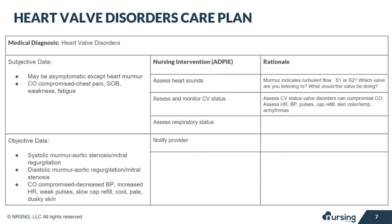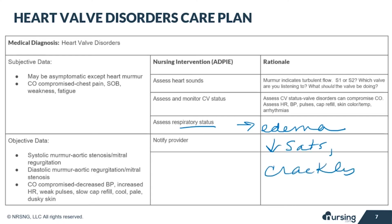Assessing respiratory status is also important because if blood is not moving forward or is backing up, this can create pulmonary congestion and lead to pulmonary edema. We would see decreased oxygen saturation, crackles in the lungs, and the patient can even have pink frothy sputum. We also want to notify the provider of any new or sudden onset of murmurs, especially if accompanied with signs of poor perfusion or pulmonary edema, as papillary muscle rupture and mitral valve prolapse can occur suddenly. These issues are often accompanied with chest pain, shortness of breath, and other signs of heart failure.